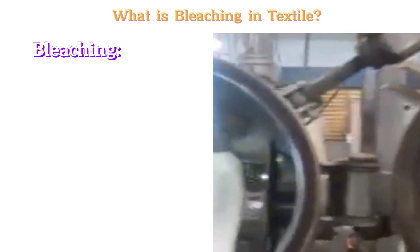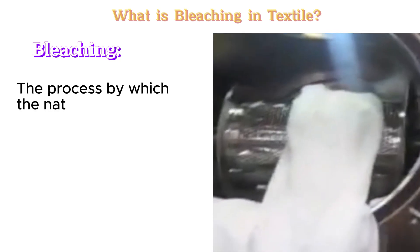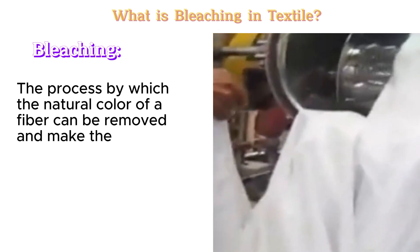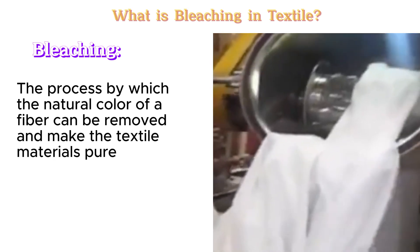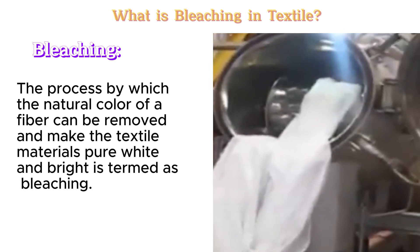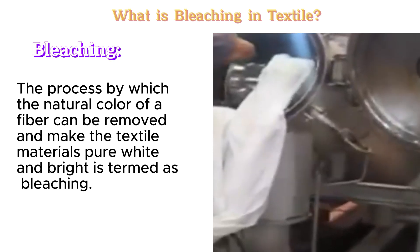What is bleaching in textile? The process by which the natural colour of a fibre can be removed and the textile materials made pure white and bright is termed as bleaching.